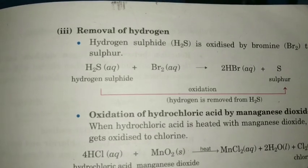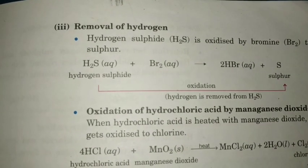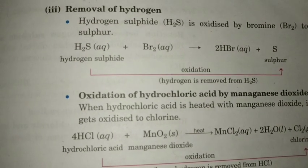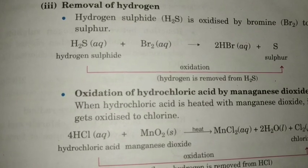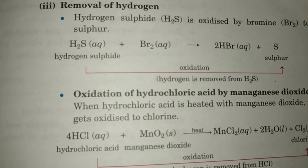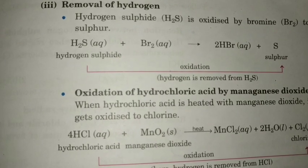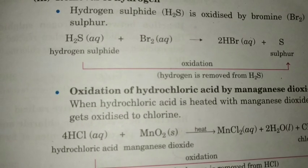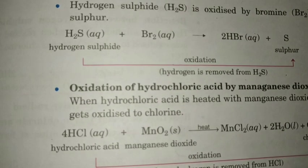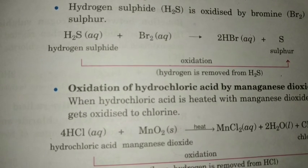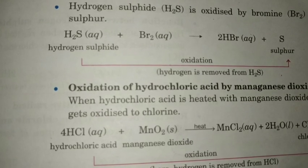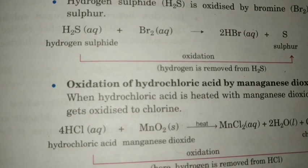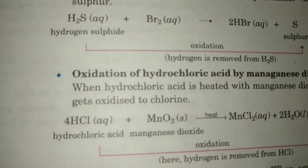Hydrogen sulfide is oxidized by bromine to sulfur. So H2S plus Br2 gives HBr plus S. Here H2S changes to S — removal of hydrogen takes place, so this particular substance is oxidized. Therefore, hydrogen sulfide is oxidized to sulfur in the presence of bromine — it is oxidized by bromine to sulfur.